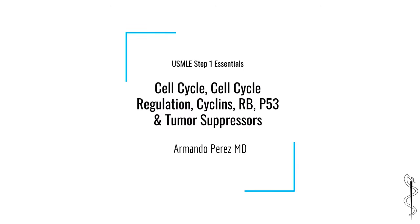Hello everybody and welcome to the MedAce USMLE Step 1 Essentials video series, where we talk about very high yield Step 1 topics. In this video we will be talking about a topic which shows up very frequently on the exam: the cell cycle and the proteins involved in regulating it, namely cyclins, retinoblastoma protein or RB, and p53. The genes which code these proteins are known as tumor suppressor genes and they are extremely important because they are associated with the development of cancer.